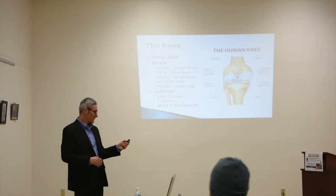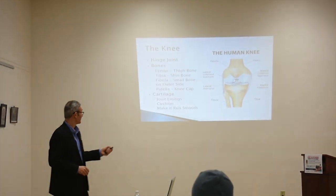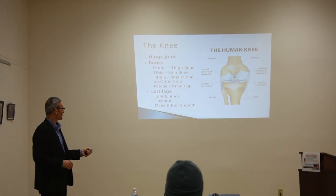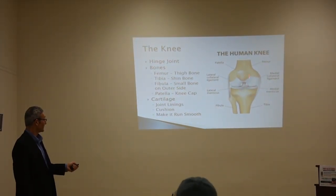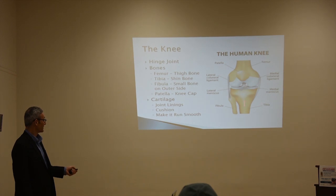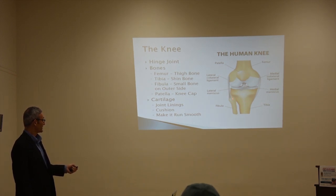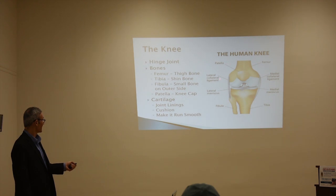There are three primary bones that make up the knee. There's the femur, which is the thigh bone. There's the tibia, which is the shin bone. There's the patella, or the kneecap. There's also the fibula, a small bone that runs down the outside — it's not generally as functionally important, though one of the ligaments does attach to it.